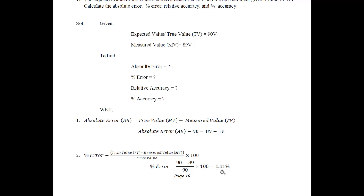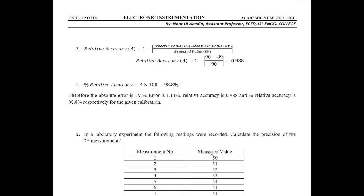Relative accuracy, represented by A, is 1 minus (expected value minus measured value) divided by expected value, which is 1 minus (90 minus 89) divided by 90, equals 0.988. Percentage relative accuracy is accuracy into 100, which is 98.8 percent. At the end, also write a conclusive statement for the problem.